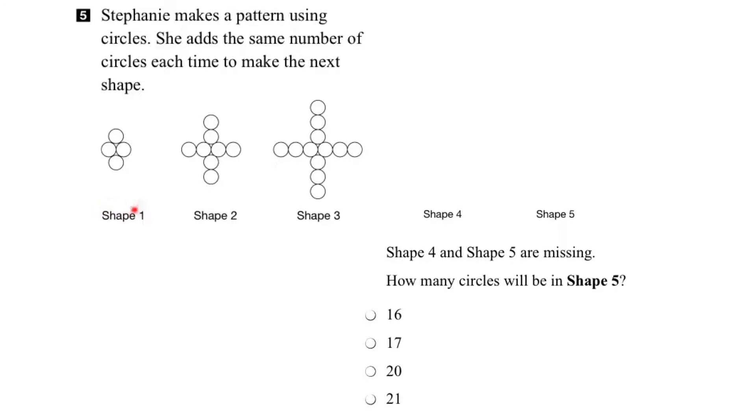Okay, let's start with shape number 1. How many circles do we have in shape 1? We have 1, 2, 3, 4 circles. So we'll put that down here.